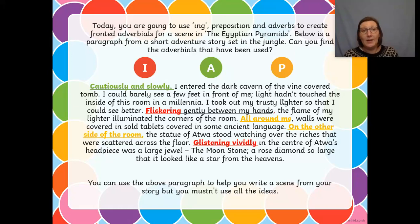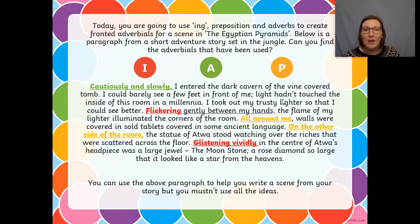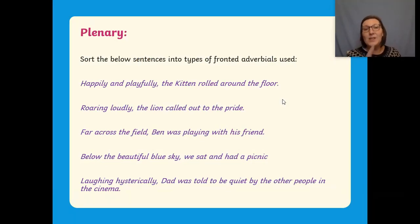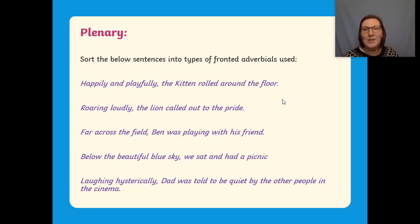I want to see in your work fronted adverbials ending in ing. You can use the word banks to help you, but you can also think of some yourself. I want you to use adverbs of manner — how somebody is doing something. How did the camel move? How did the man move when he found the cartouche? I'd also like you to use prepositions: where was the cartouche, where was the pyramid, was it in the distance, what did the man see when he got inside? Pause the video now and go and have a go at writing your paragraph using the ing, adverbs of manner, and prepositions.